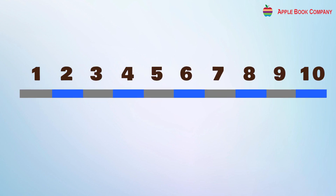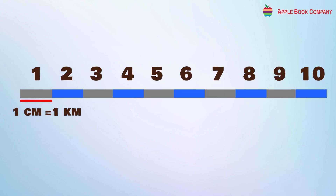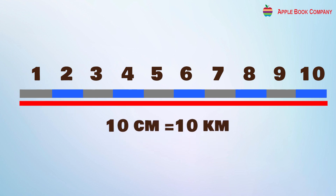The scale represents the relation between distances on the map and actual distances on the ground. For example, if a map has a scale of 1 cm equal to 1 km, then a 10 cm distance on the map is equal to 10 km on the ground.